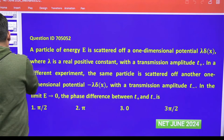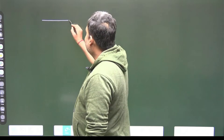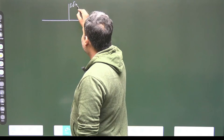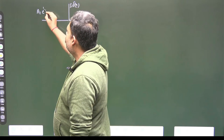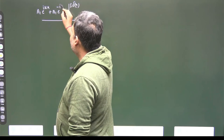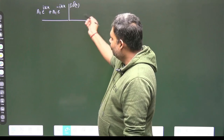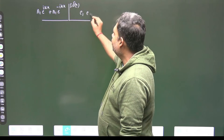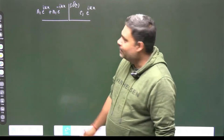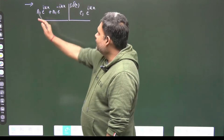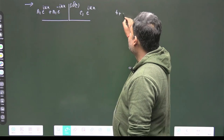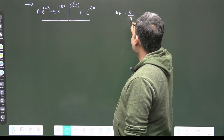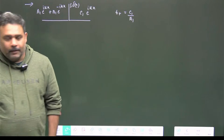For the first potential λδ(x), the wave function on the left side is a1·e^(ikx) + b1·e^(−ikx) — incoming plus reflected — and on the right side it is c1·e^(ikx), which is the transmitted wave. So the transmission amplitude T+ is defined as c1/a1.